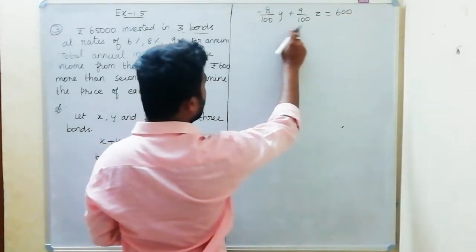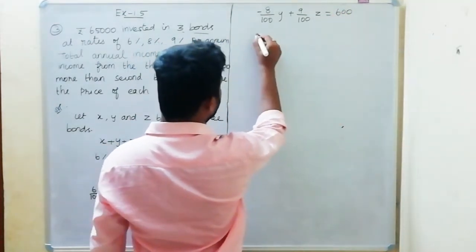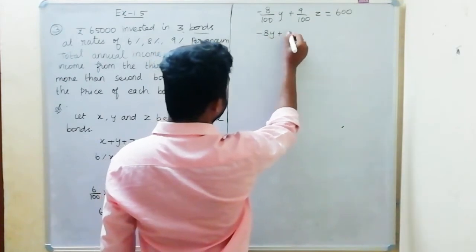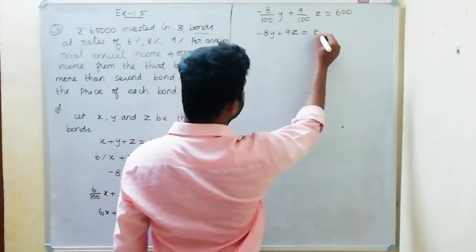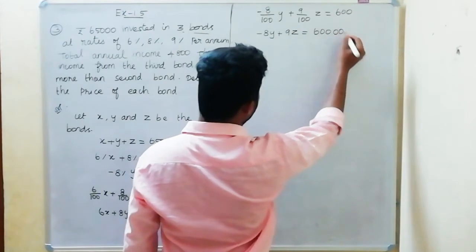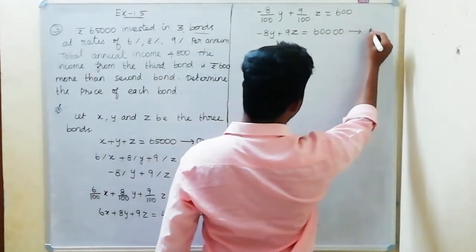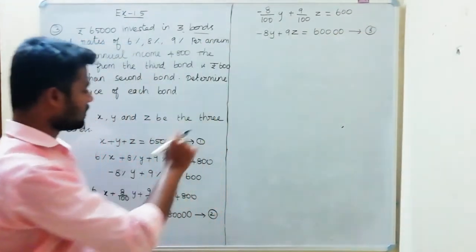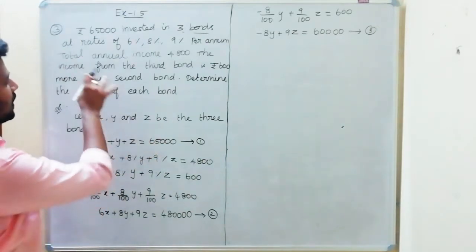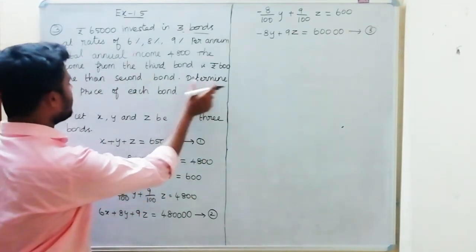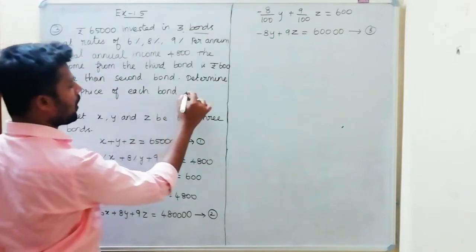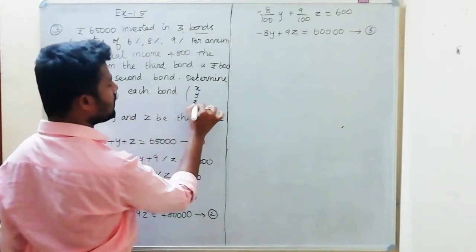After multiplying by 100, we get 6x plus 8y plus 9z equals 480,000. For the third equation, 9z minus 8y equals 600, which becomes minus 8y plus 9z equals 600. This is the third equation.